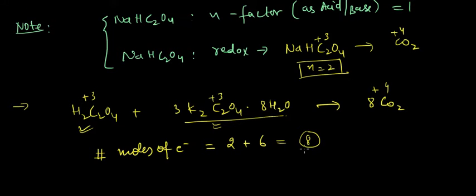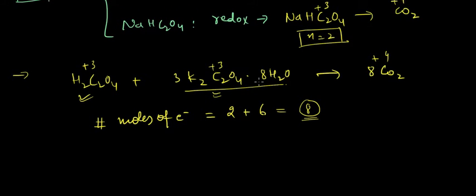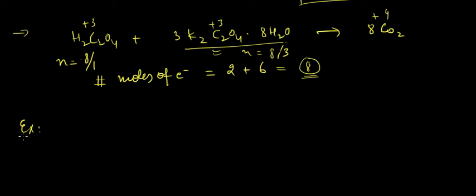Total moles of electrons consumed in the reaction: 2 from H2C2O4 and 6 from the other compound, giving a total of 8 moles of electrons. The n-factor is calculated as moles of electrons divided by stoichiometric coefficient — that gives 8/1 for one compound and 8/3 for the other.